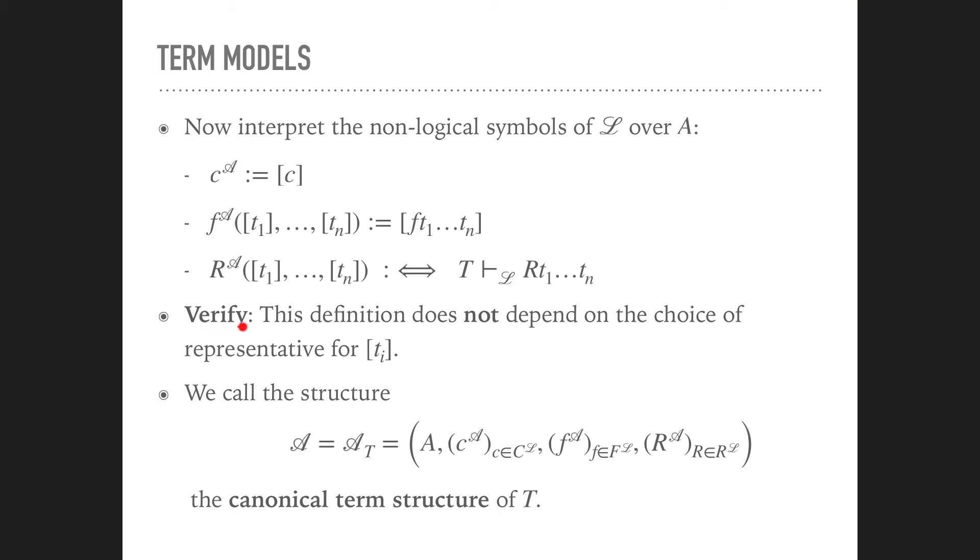So now we need to verify that this definition does not depend on the choice of representative for each equivalence class here. Because we're actually using the representative here to define, for instance, the value of this function application. And again, just as before, you take a look here at the equality axioms. Remember these equality axioms also included the congruence for functions and relations. And that's precisely what you will need here. So once you've verified this, we actually see that all these definitions then are well defined. We get a structure and this structure that we get this way we call the canonical term structure of a theory T.